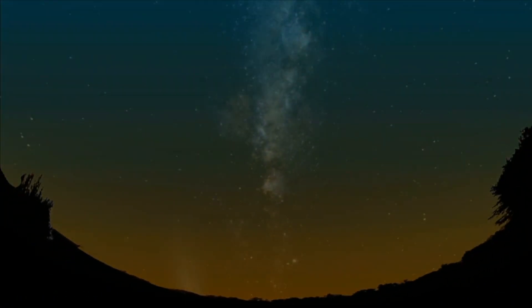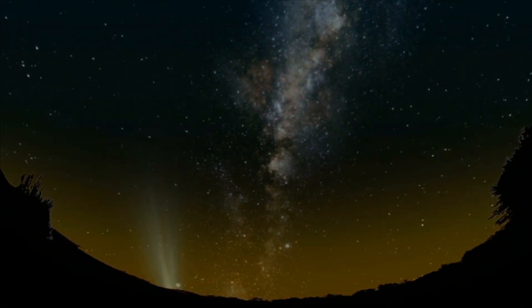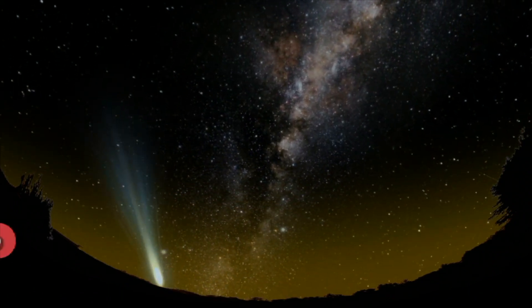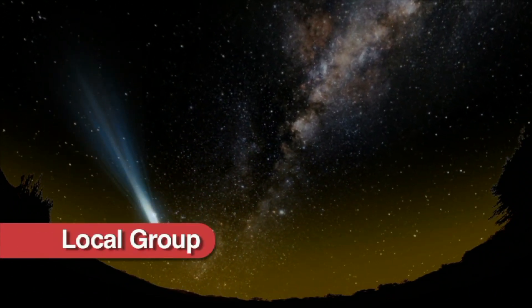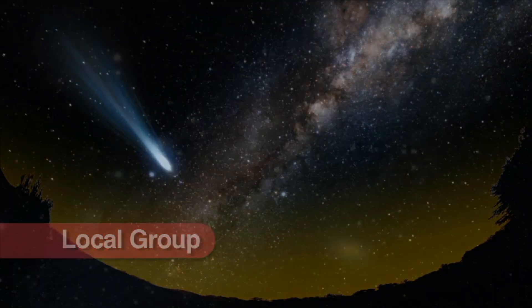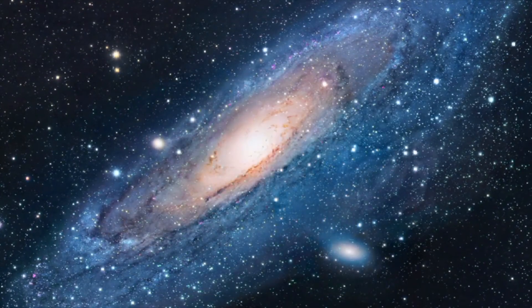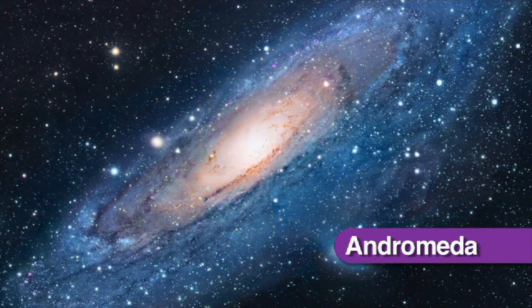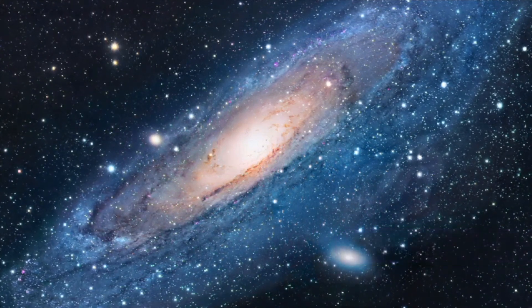The Milky Way is part of a cluster of around three thousand galaxies called the local group. The closest galaxy to the Milky Way is Andromeda, which is 2.6 million light-years away from us.